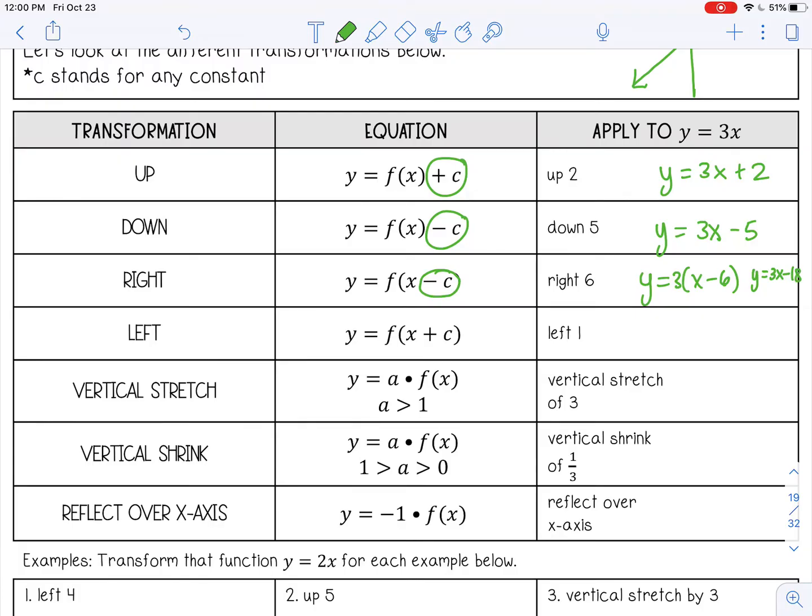If you want to move to the left, you're going to add in parentheses to the x. So y equals three parentheses x plus one. And then if you want to simplify that and distribute that three, 3x plus three.